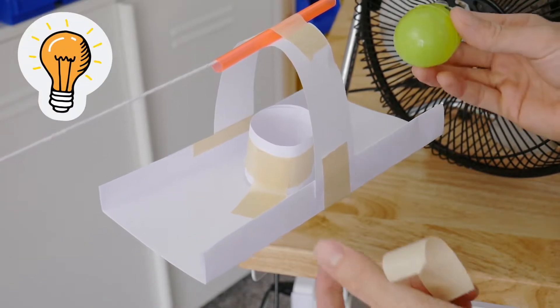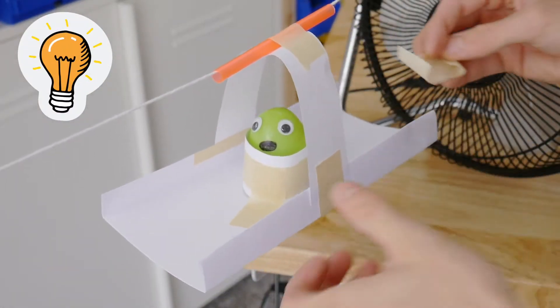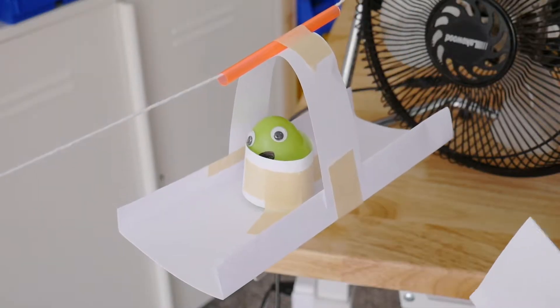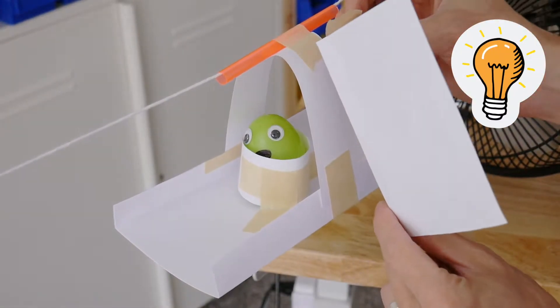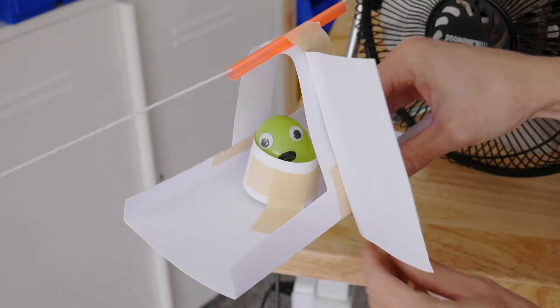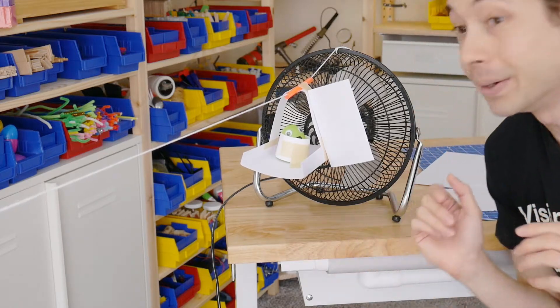One idea is that you can build some kind of seat for your toy so that it's less likely to fall out. You can also try cutting out and then taping on pieces of paper that will help catch more of the wind. Okay let's try this out.